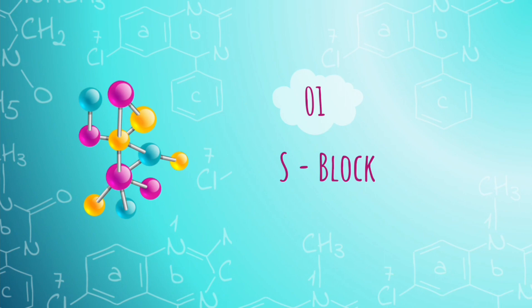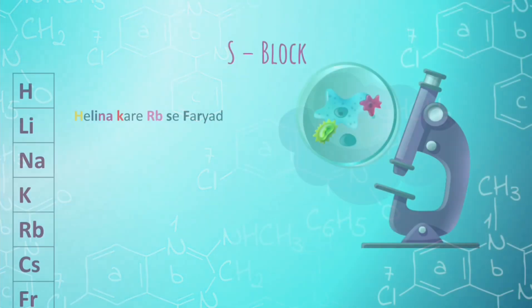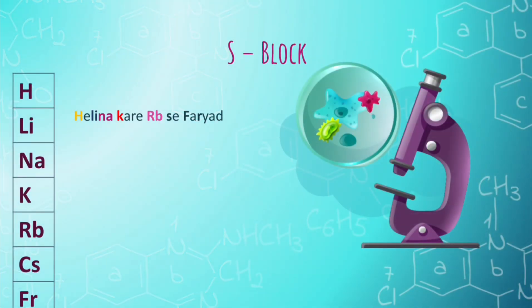First we see trick to memorize S block elements. First group contains elements Lithium, Sodium, Potassium, Rubidium, Cesium, Francium. And trick to memorize these elements is, Helina kare rap se faryat.